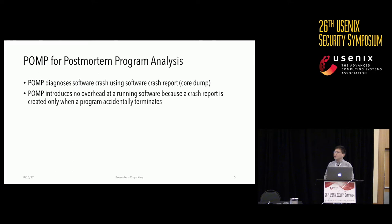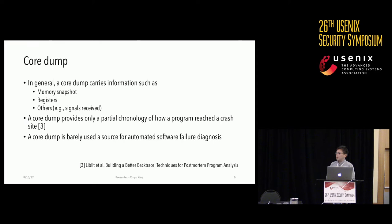Our technique is called POM. The basic idea is to use a software crash report — also called a core dump — to diagnose software failures. A crash report is only created when a program accidentally terminates, so it introduces no overhead. A core dump typically carries memory snapshot, register information, and signal information, but according to a recent study, it provides only a partial chronology of how programs reach a crash site.